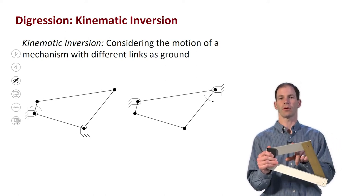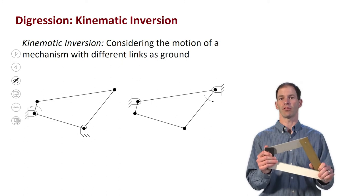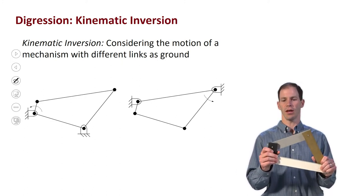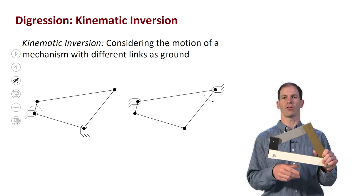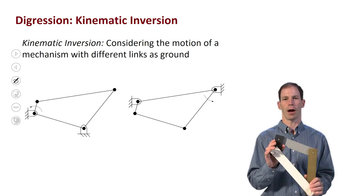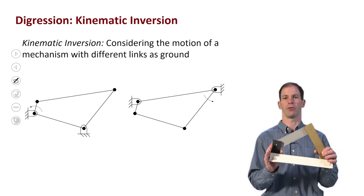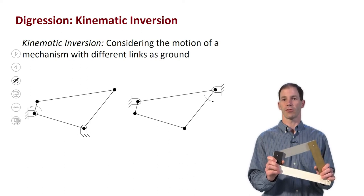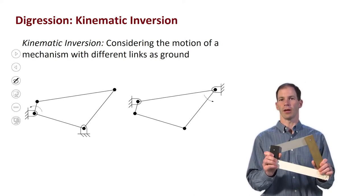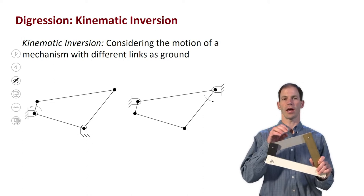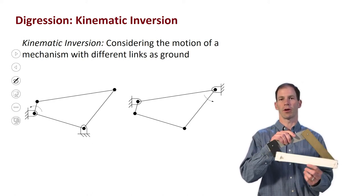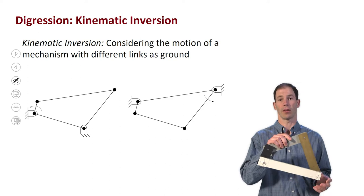One note: do not confuse kinematic inversion with geometric inversion, where we're talking about toggle positions and things like that. Kinematic inversion is asking which link is ground and how am I moving the rest of the mechanism relative to that. The inversion we're going to do here is basically looking at how the ground moves with respect to the coupler — I'm going to fix the coupler and look at the ground with respect to that.